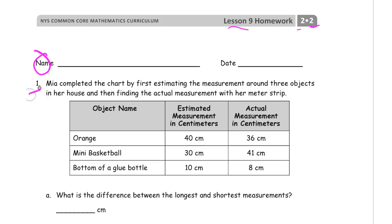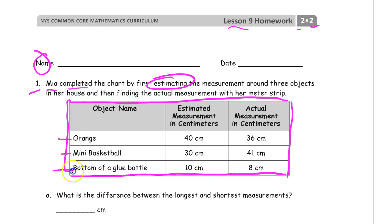Number one. Mia completed the chart by first estimating the measurement around three objects in her house. The three objects are an orange, a mini basketball, and the bottom of a glue bottle. She estimated the measurement around these objects first and then she actually measured them. She found the actual measurement with her meter strip. So this column here is the estimated measurement, this is the actual measurement for each object.